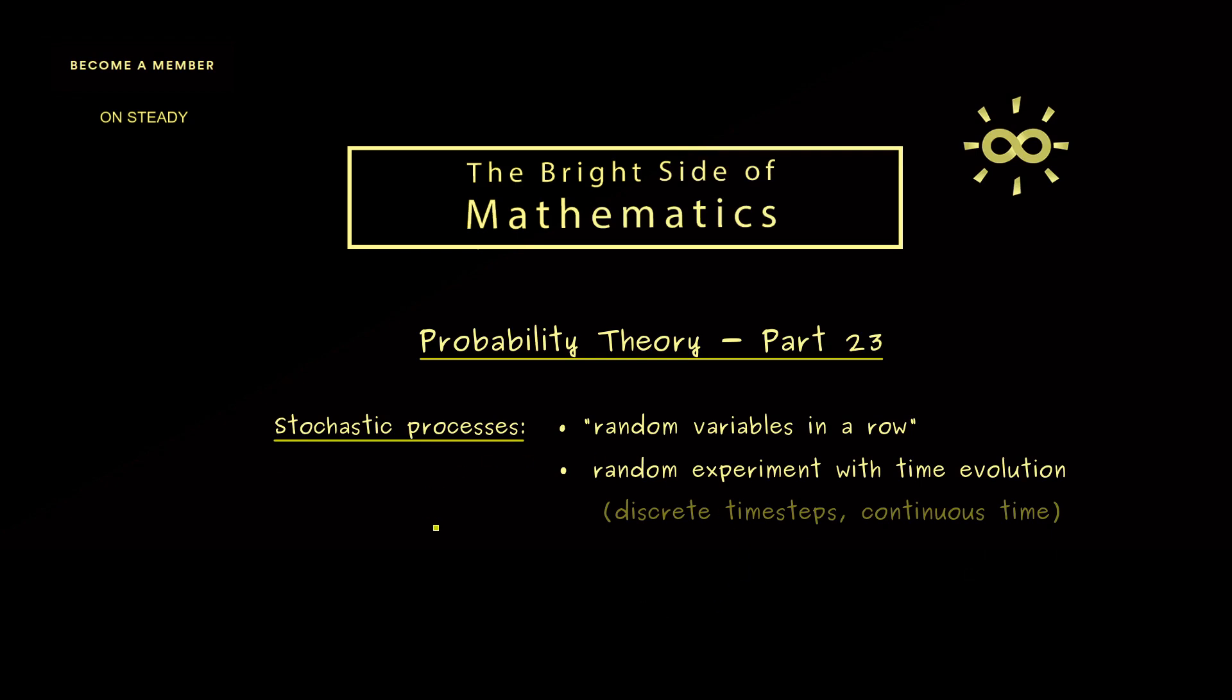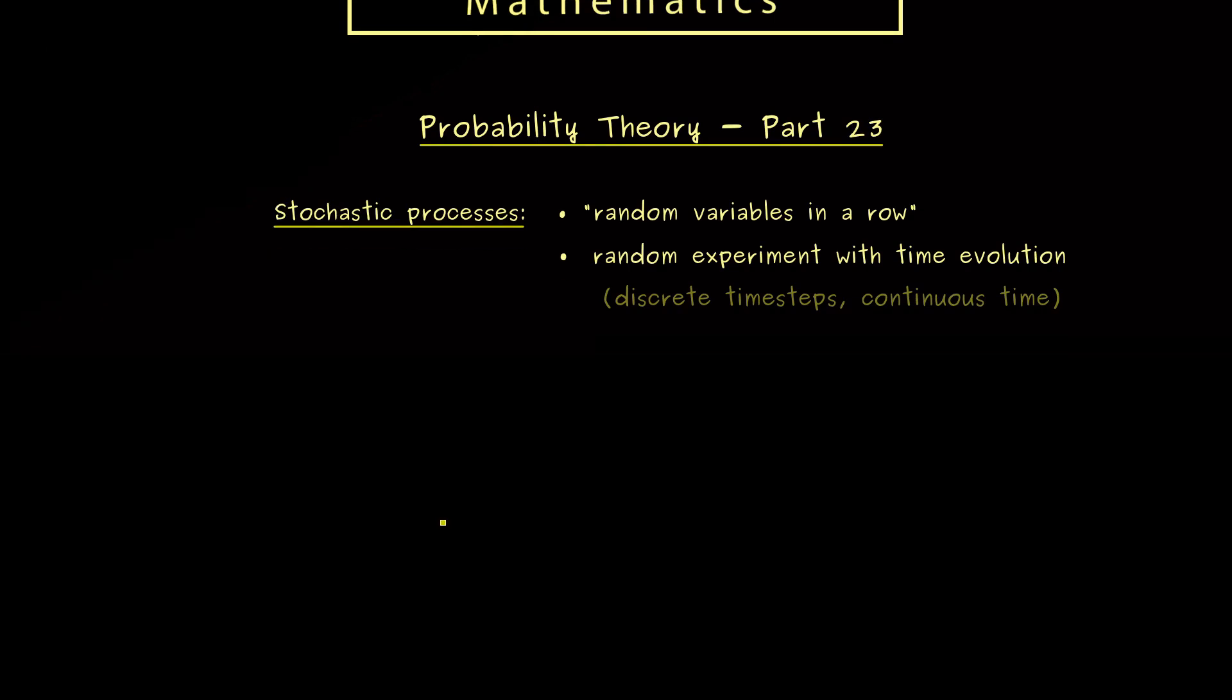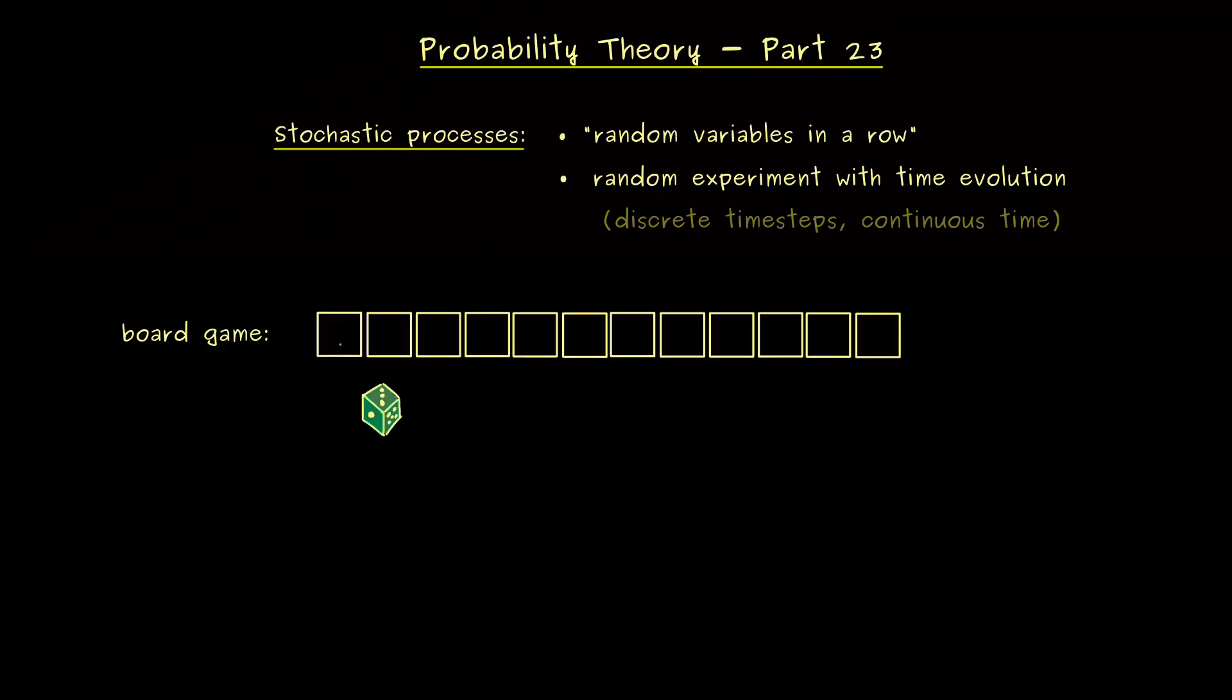So maybe let's immediately start with such a board game so that you can see that the description with a stochastic process is helpful. So let's imagine you have a figure on a board game that moves after throwing a die. This means after the first time step we have 6 possibilities for the outcome, and of course we know the corresponding probabilities.